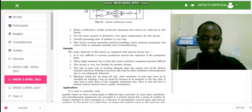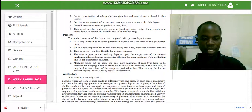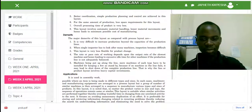Where can we apply this type of layout? As I told you before, it's mostly adopted by many modern industries. It is possible where an item is being made in different types and sizes. The machinery and manufacturing equipment are arranged in process layout, but a group or number of similar machines is then arranged in a sequence to manufacture various types and sizes of products.